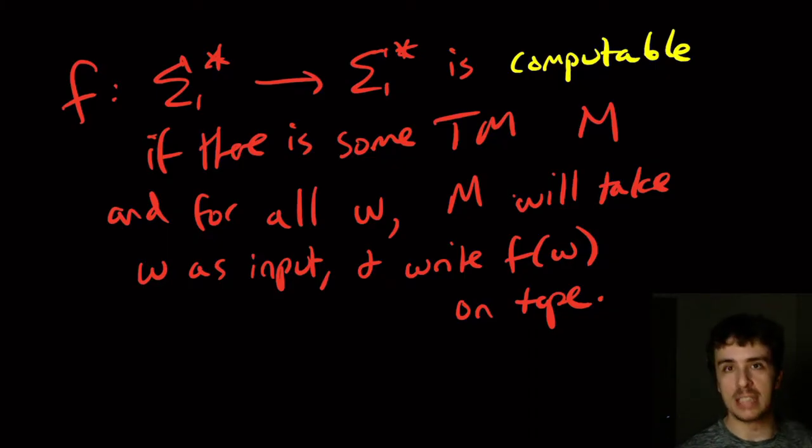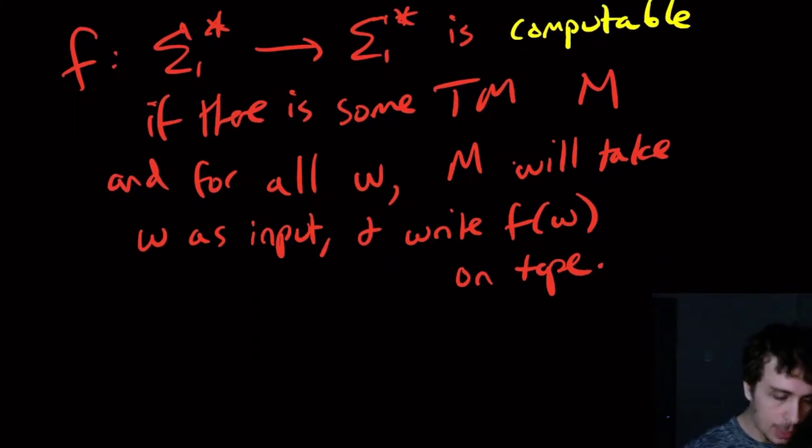So this thing is computable if the Turing machine can eventually write it out onto the tape. Computable is just a natural thing—it's like a computer program. Can you actually compute this thing? Then it's computable. If I wanted to compute n squared, I would just take the input w, think of it as a binary number, and square it. We can easily do that on the computer, so therefore it's computable.